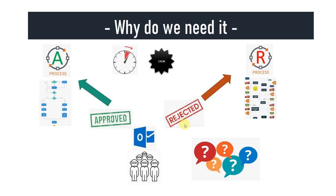If the email subject says 'approved,' they want the Approve Process to run; if it says 'rejected,' they want the Reject Process to run. We cannot schedule this with a time trigger or cron expression because we don't know how many emails will come or when. This is exactly where we need a Queue-Based Trigger. Whenever a new email arrives, it adds that email to the queue, and whenever there is a new item in the queue, the corresponding process gets triggered automatically.